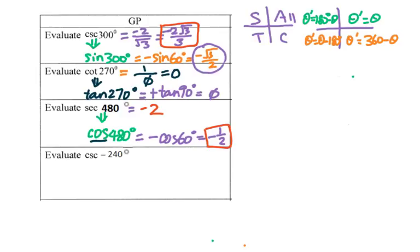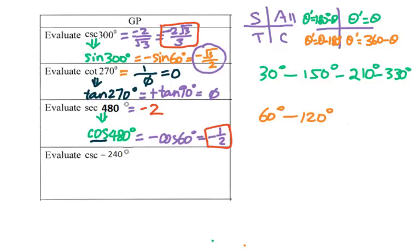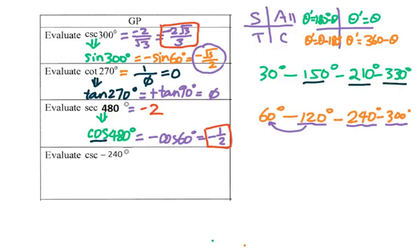Is there a shortcut for finding the reference angle? Think about 30 degrees — related angles are 150, 210, and 330. For 60 degrees, related angles are 120, 240, and 300. Notice that 120, 240, and 300 can be divided by 6, but 150, 210, and 330 can only be divided by 3, not by 6. This may help you remember the reference angles without doing the full calculation.